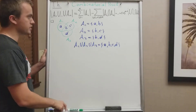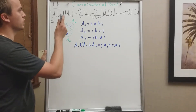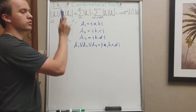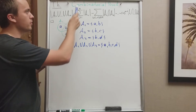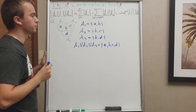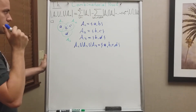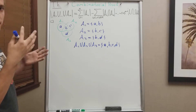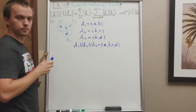Hello guys, in this video I want to prove the inclusion-exclusion theorem by using a combinatorial proof. So let's start — let me show you the idea of the proof by considering this example.